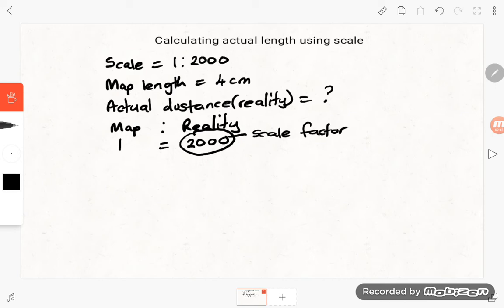So the question is saying calculate the actual distance or the distance in reality. There's a formula that we use. The formula says actual distance or actual length is equal to map length times the scale factor.